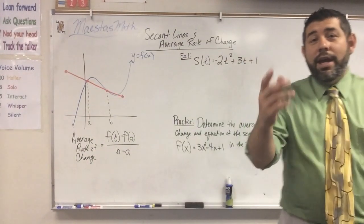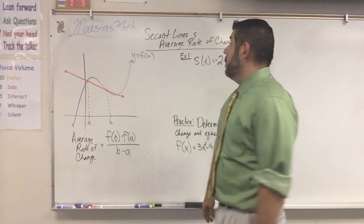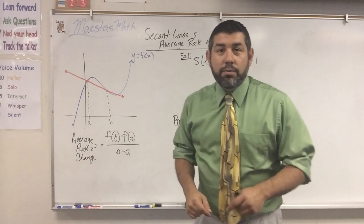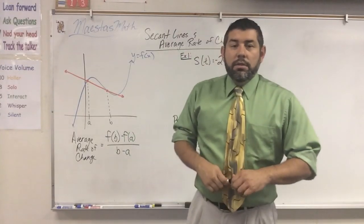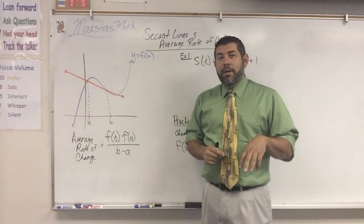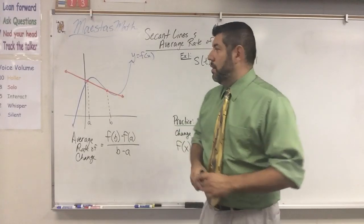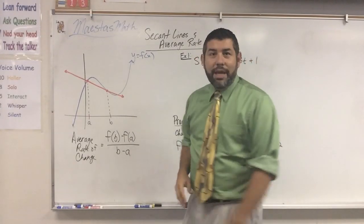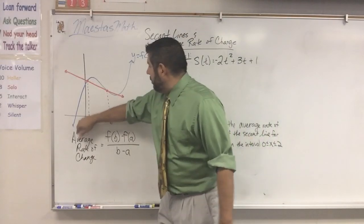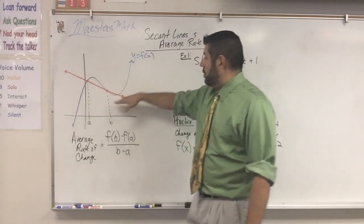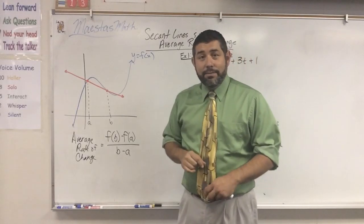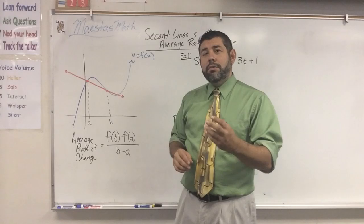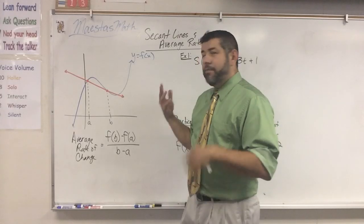Mr. Maestas here, and in this video I'm going to go over secant lines and average rate of change. So let's talk about what a secant line is first. I've got here a function — this is just a general graph, y equals f of x — and a secant line is any line that crosses through two points of a function.